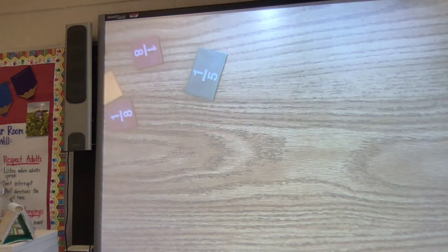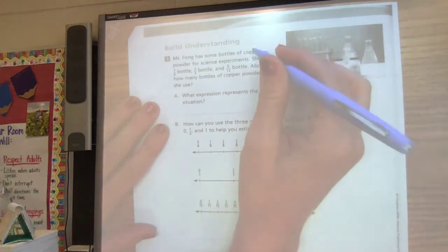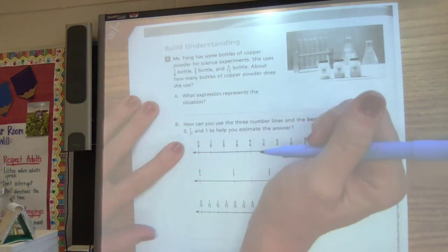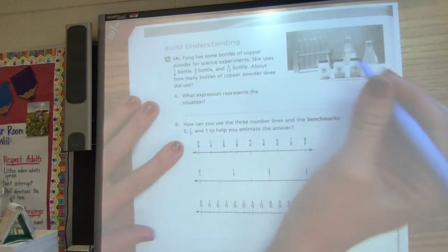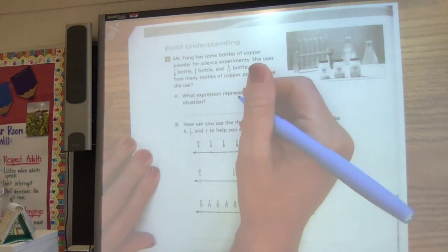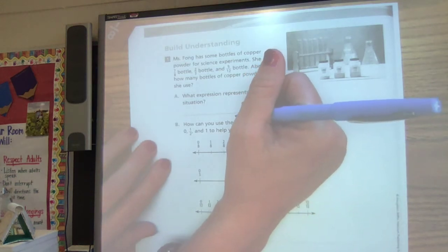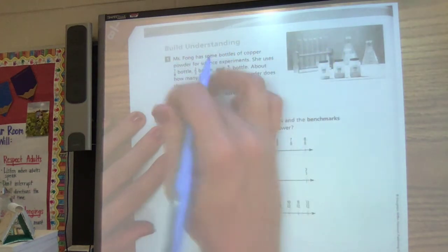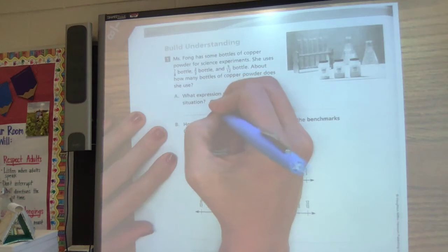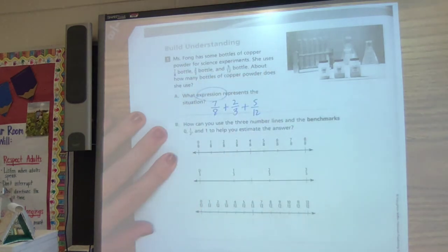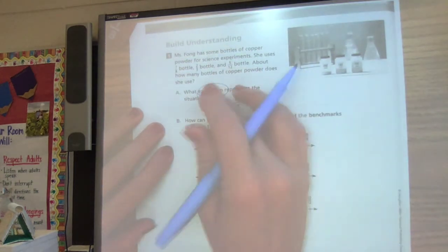Okay. Let's turn the page 150. Mrs. Fong has some bottles of copper powder for science experiments. She uses seven eighths bottle, two thirds bottle, and five twelfths bottle. About how many bottles does she use? So first it says, what expression matches or represents the situation? Well, she's got this, this, and this, and she's using them all. So I'm going to add those seven eighths, two thirds, and five twelfths. Remember, an expression is a number sentence without an equal sign. So that's all we need to write.